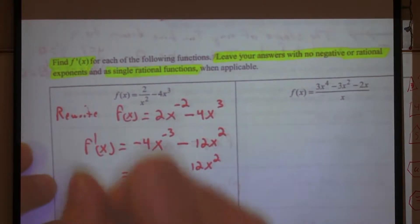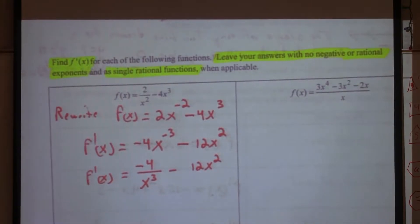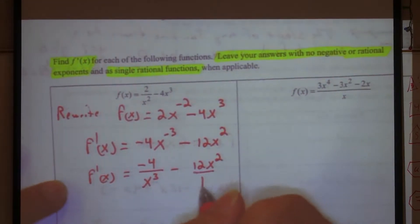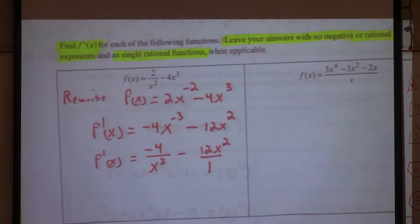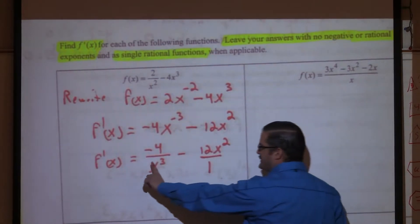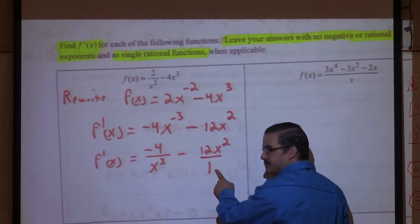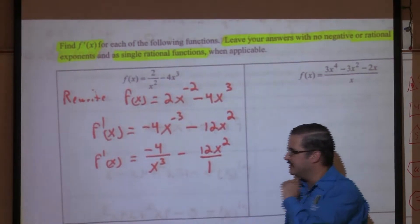I need to make it look like they want me to make it look like. So they don't want negative exponents, and I got a negative one there. So what do I do with it? Send it down. So now I have negative four over x to the third minus 12x squared. Do I still have a problem, though? Yes. What's the problem? One single fraction. So how do I make it be one single fraction? Common denominator, right? So what do you think the common denominator would be?